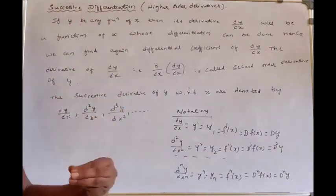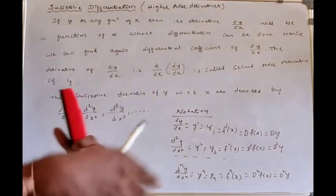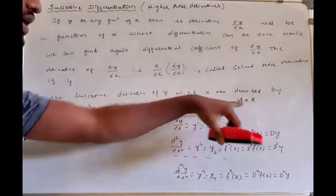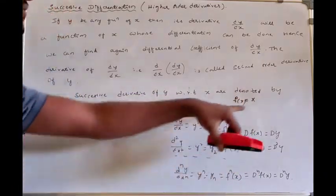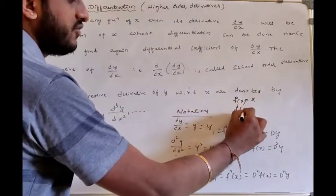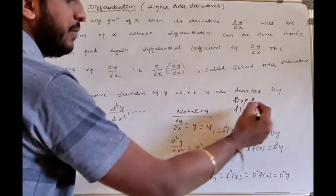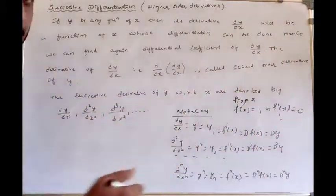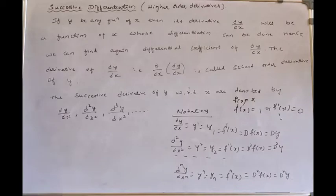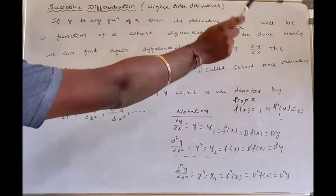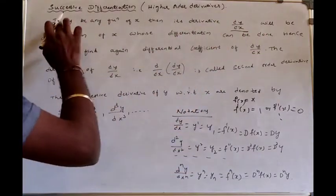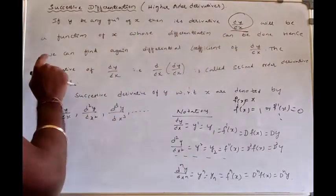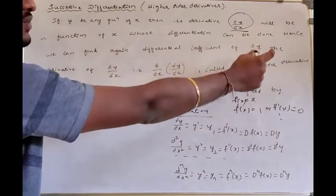Successive differentiation means that one function is differentiated repeatedly. Suppose y is equal to f(x). If y becomes any function of x, then the derivative dy/dx will also be a function of x, whose differentiation can be done again. Hence we can find the differential coefficient of dy/dx.